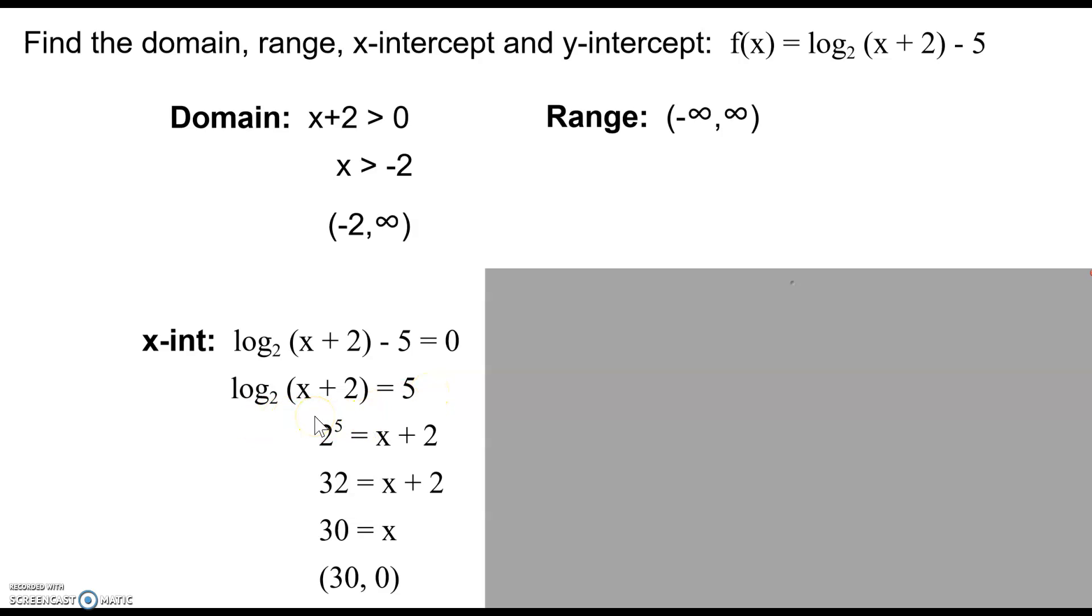This is not multiplication on the right. It is a logarithmic expression, so that means that 2 is my base raised to this exponent over here of 5 should give me this value inside of here, x plus 2. So 2 to the 5th simplifies to 32, and then solving for x we get 30. So my x-intercept, the point on the graph, is (30, 0).